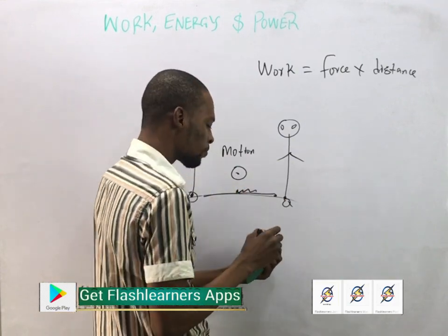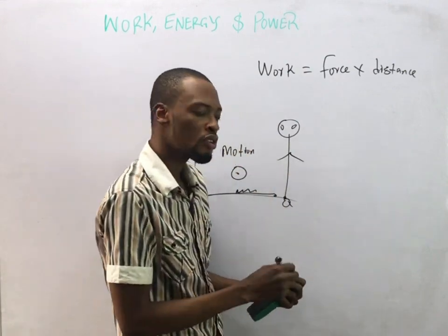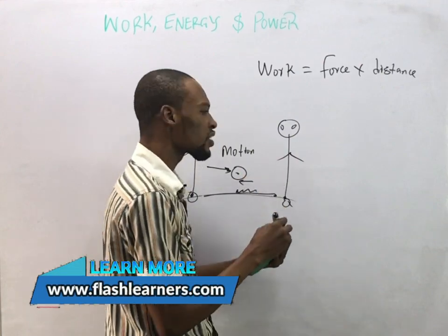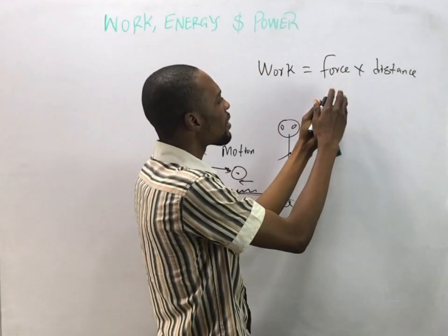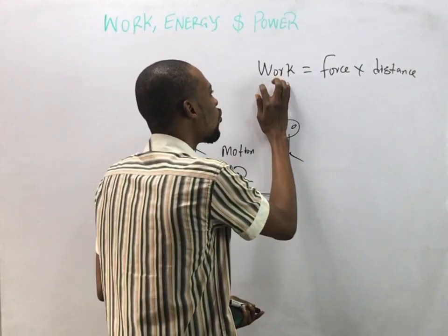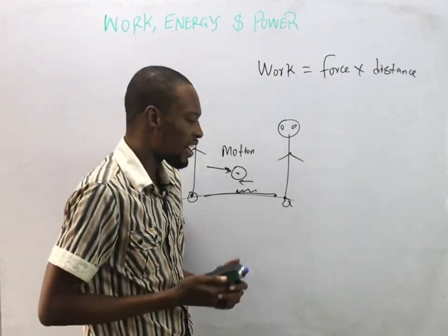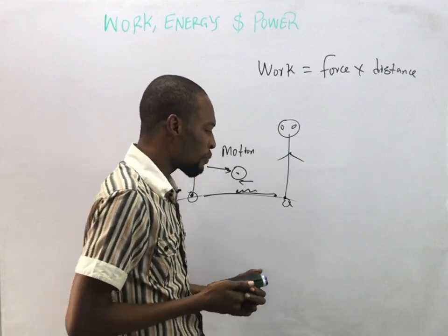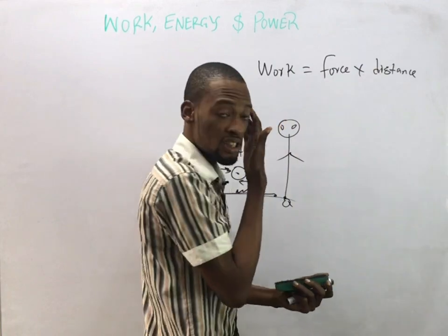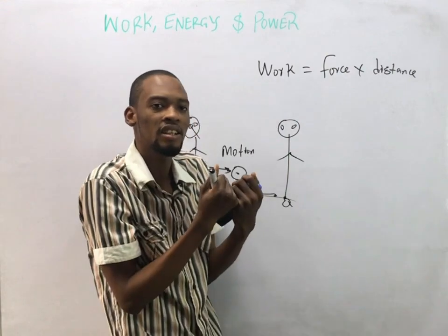We also have random motion, which is the zigzag motion of a body. Motion would not have been possible without force. When a force is applied to a body and is enough to overcome friction, the body moves. If force is applied to a body and the body moves a distance, therefore work is said to be done. If I'm carrying a load from one point to another, that means I am doing work.